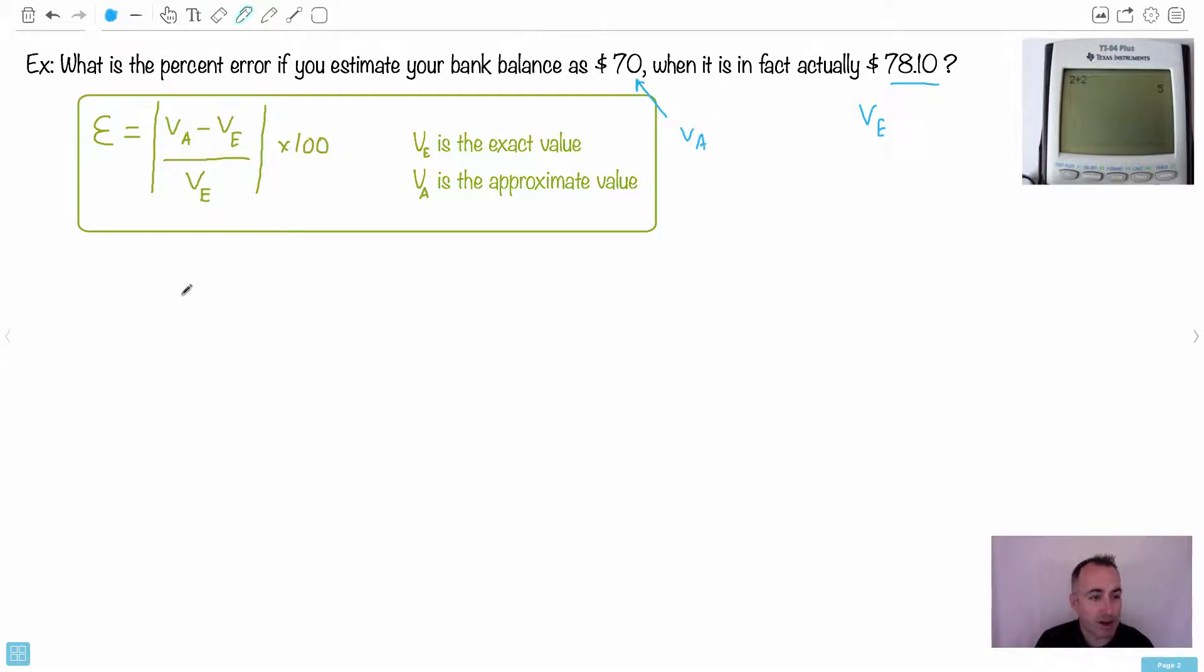Well, then it's just a matter of putting in the equation with the proper letters here. So absolute value of VA, VA is 70, minus VE, which in this case is 78.1. Well, we can put in a zero here. It doesn't really matter. Divide that by VE, which is, again, 78.1. So what we do then, we multiply that by 100, and away we go. We just need a calculator for this.